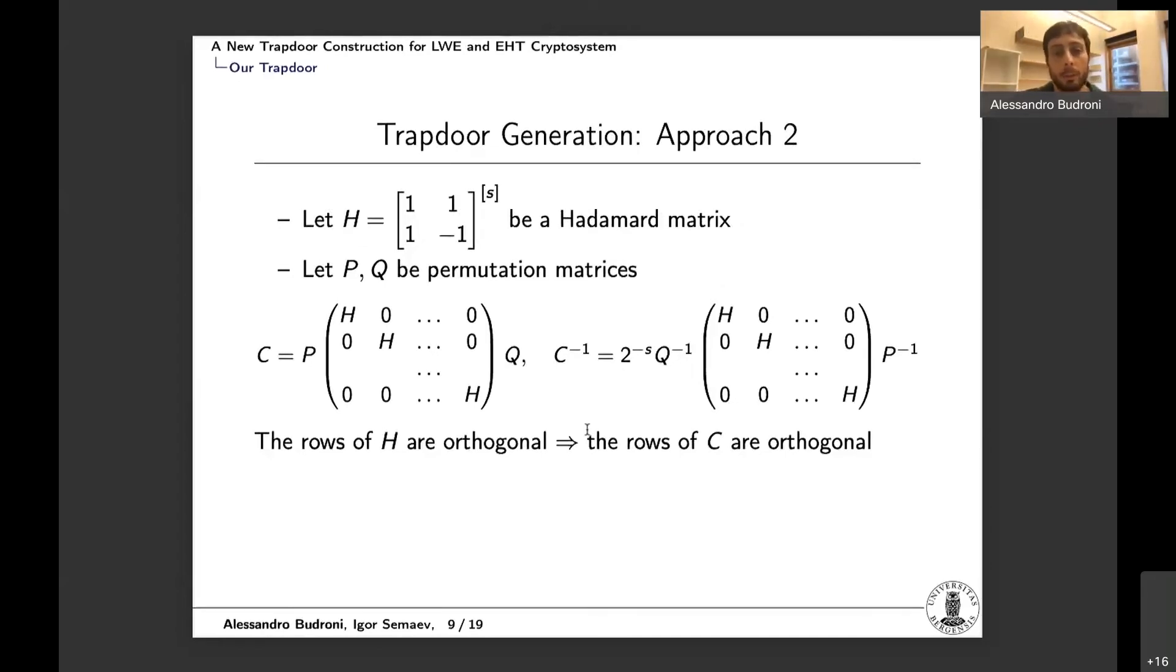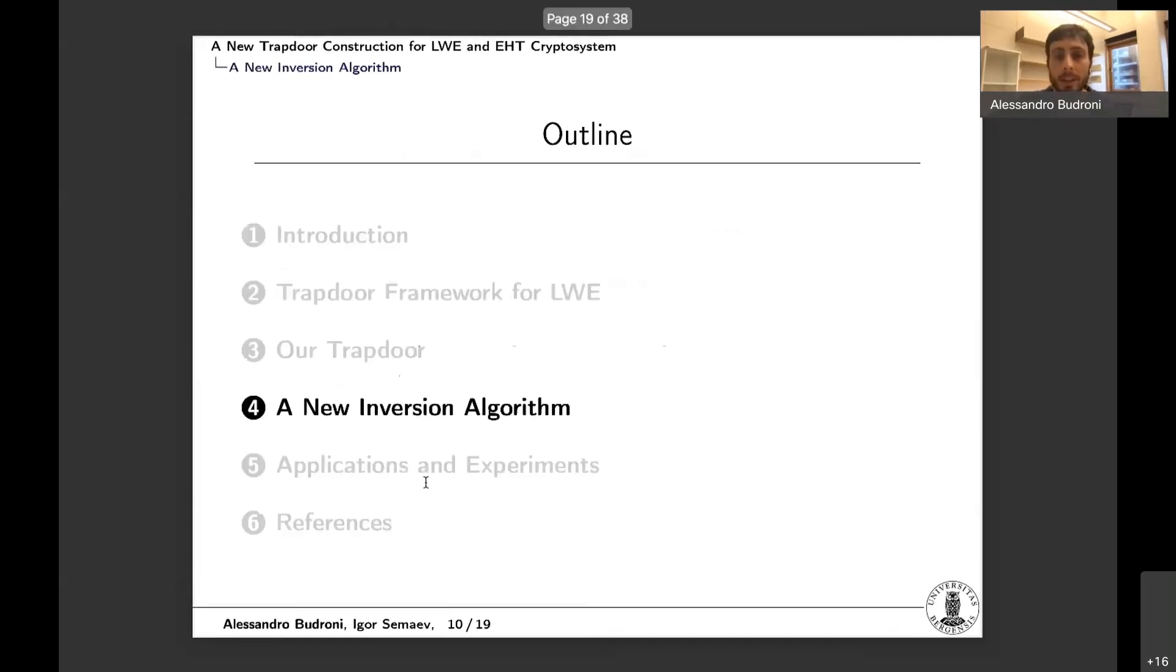So the second idea to overcome this problem is to build C as follows. We have two permutation matrices P and Q, and then we have another matrix which is the product of a Hadamard matrix and the identity, and then by exploiting the properties of Hadamard matrices and permutation matrices, which are all easy to invert, we can invert C quickly and easily. And also we have the nice property that since the rows of H are orthogonal, then also the rows of C are orthogonal. A drawback of this approach that we found out is it's not secure for the first choice of the gadget matrix, but it seems to be still secure for the second choice, at least we believe so.